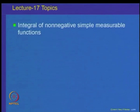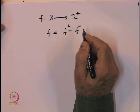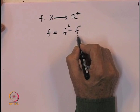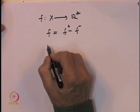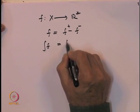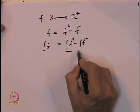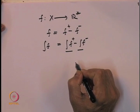The basic idea is we want to define the notion of integral for a function f defined on a set x taking values in R star. For a function f, we can represent f as the positive part minus the negative part. The advantage is that f-plus and f-minus are both non-negative functions. Integration being a linear process, the integral of f equals integral of f-plus minus integral of f-minus. So it is enough to define the notion of integral for non-negative functions.